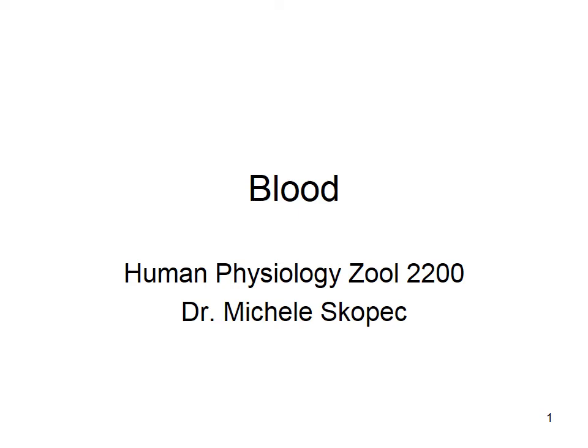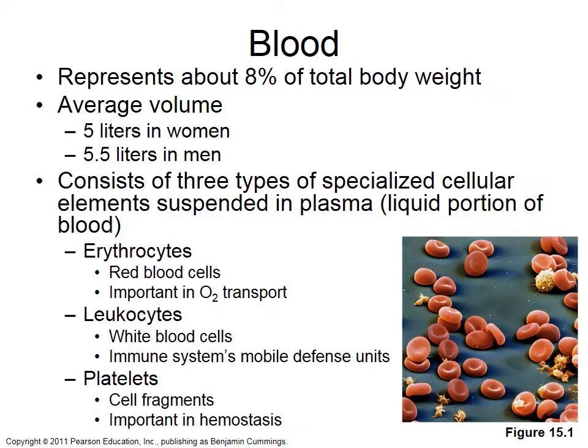We're going to start our cardiovascular physiology three-lecture series by talking about blood. Blood represents about 8% of your total body weight, so a good chunk of your body weight is blood. On average, women have about 5 liters, men have 5 and a half, because on average men are larger — that's why they tend to have about half a liter of blood more.